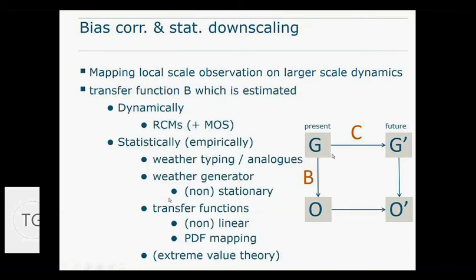To get to the different methods for bias correction, we can do that dynamically with a regional climate model. But we assume that the different groups here do not use a regional climate model because it's very computationally intensive. We assume that groups will use different statistical tools if they need bias correction. There's different ways to do it - you can do it with weather typing using analogues, a weather generator, or develop simple transfer functions.